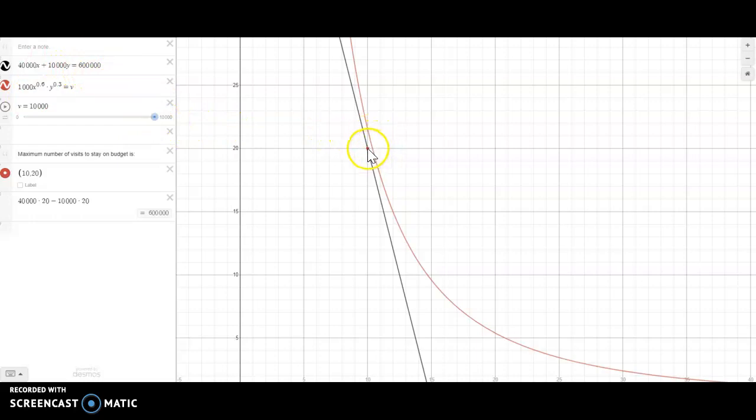So I have to stay at most on the line. And of course, if my red curve is on the line right about there, I can get about 9,800 visits by hiring 10 doctors and 20 nurses. In fact, we can check that if I hired 10 doctors and 20 nurses, that should be plus right there, then I will spend exactly $600,000. And that is the largest number of visits that I can have.